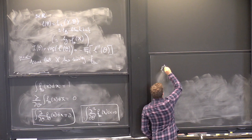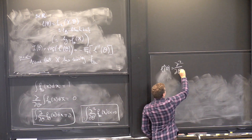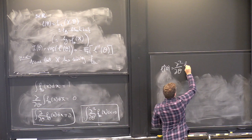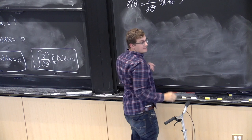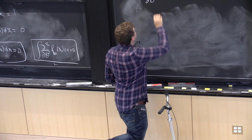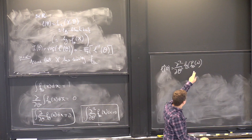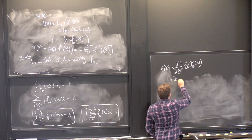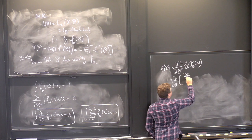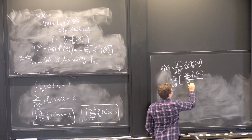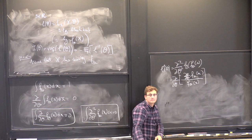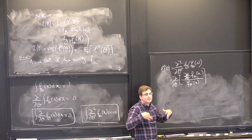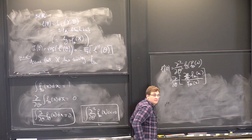What is L double prime of theta? It's the second derivative of log of f theta of x. We know that the derivative of the log is f prime over f — so the derivative of log f theta with respect to theta is the partial derivative of f theta divided by f theta itself.